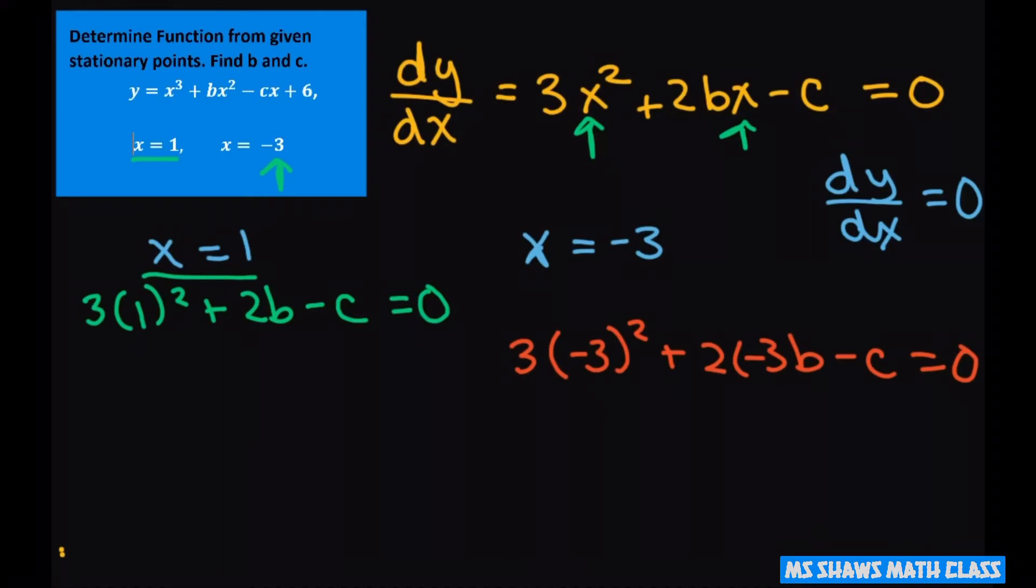Alright, straighten this up a little bit. We get equation 1, we'll call this one 3 plus 2b minus c equals 0. And equation 2 we're going to get 27 minus 6b minus c equals 0.